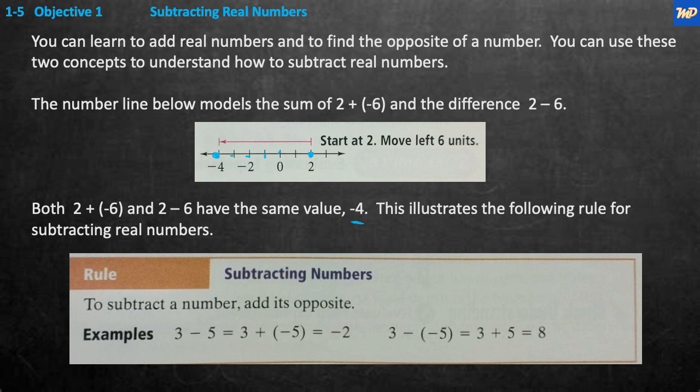Both 2 plus negative 6 and 2 minus 6 have the same value: negative 4. This illustrates the rule for subtracting real numbers: to subtract a real number, add its opposite. If it's 4, the opposite is negative 4; if it's negative 7, the opposite is 7. So 3 minus 5 is the same as 3 plus negative 5, which equals negative 2. Or, 3 minus negative 5 equals 3 plus 5, which is 8, because the two negatives cancel to make a positive.